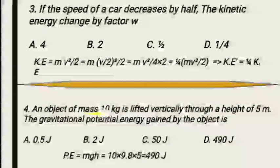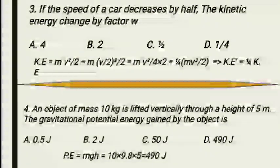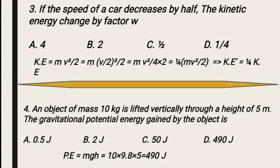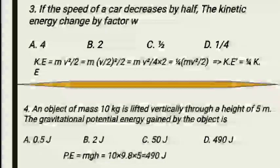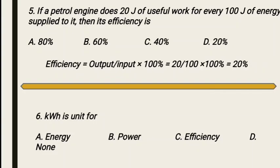The fourth MCQ: an object of mass 10 kg is lifted vertically through a height of 5 meters. What is the gravitational potential energy gained by the object? Gravitational potential energy by definition equals mgh. Mass is 10 kg, gravitational acceleration g is 9.8, and height h is 5 meters. Multiplying gives 490 joules. The correct option is Option D: 490 joules.